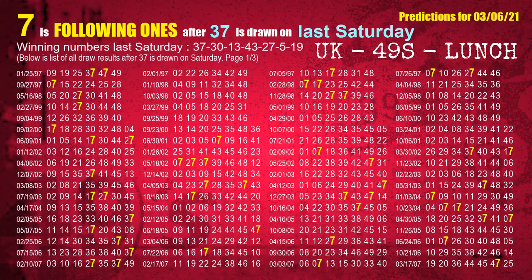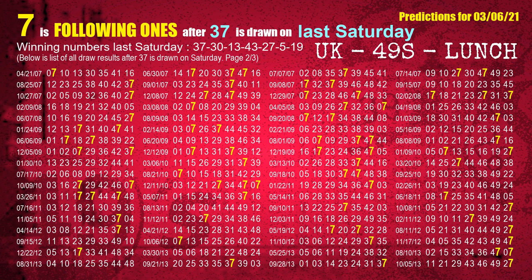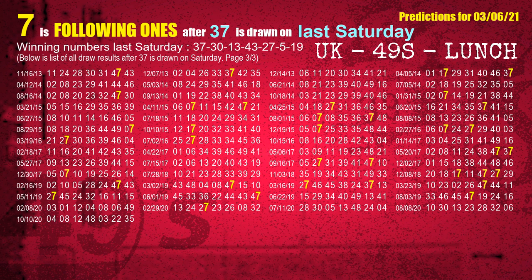After calculating following ones with today's result, we will find out following ones through the result of the same day last week. The first winning number last Saturday is 37. We list all draw results which are one week after a Saturday draw with 37 as a winning number. The most frequently following units digit is 7 when 37 is the winning number on last Saturday. We highlight the units digit 7 in yellow for you.